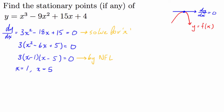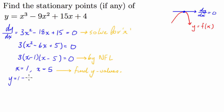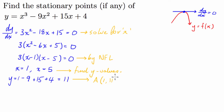We've found what the x coordinates are of our stationary points. Now we have to find the y coordinates, so the next step is to find the y values. We substitute x equals 1 into our original function: y equals 1 cubed minus 9 times 1 squared plus 15 times 1 plus 4, which gives 1 minus 9 plus 15 plus 4 equals 11. So we have our first point, let's call it A: (1, 11).